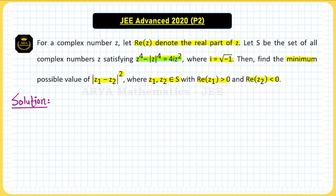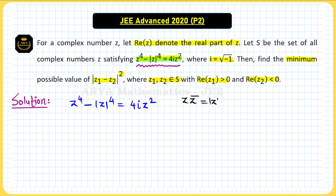First we have to simplify this equation and then see what type of locus it represents. The given equation is z⁴ minus |z|⁴ equals 4i·z². Now we know that z·z̄ = |z|², so therefore z⁴ can be written as the square of |z|², and |z|² is nothing but z·z̄. So this equation can be rewritten in this form.